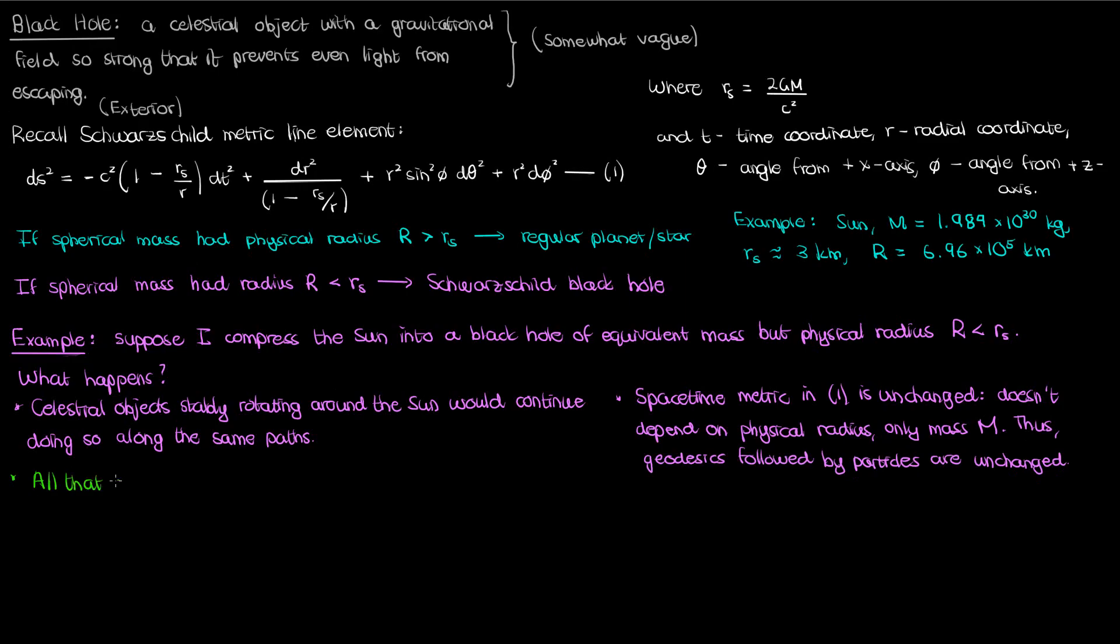All I've done by compressing the Sun into a black hole is I've expanded the region of spacetime over which my exterior Schwarzschild metric in equation 1 is valid. So instead of equation 1 being valid for a radial coordinate starting at 6.96 times 10 to the 5 kilometers, it is now valid starting at a lower value of r. So that's why if my Sun became a black hole of equivalent mass the Earth would still continue in the same elliptical orbit like it always did. The geometry of the spacetime region Earth is traveling on will remain the same according to equation 1, and as a result it's not going to get sucked into the Sun just because the Sun's now a black hole.